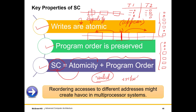Program order is preserved in the sense that in the final sequential execution equivalent to the parallel execution, for each thread the operations appear in program order. So all that sequential consistency does is take two intuitive notions — legality and program order. Legality gets converted to atomicity, and it combines atomicity and program order to give us our first consistency model called sequential consistency, which given a parallel program provides a set of valid outcomes that to our mind are intuitive. The key word here is interleaving — we maintain the order of each thread and just interleave them.